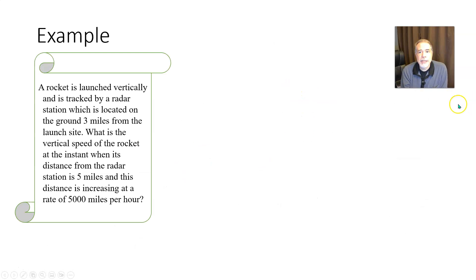So now for another example of that kind of thing. A rocket is launched vertically and is tracked by a radar station which is located on the ground three miles from the launch site. What is the vertical speed of the rocket at the instant when its distance from the radar station is five miles and this distance is increasing at a rate of 5,000 miles per hour.